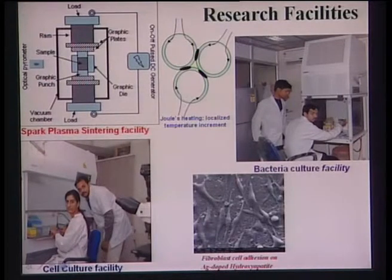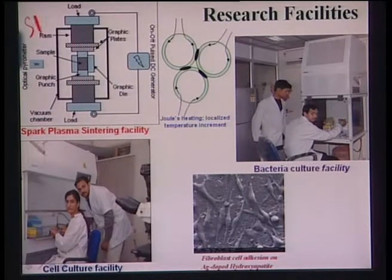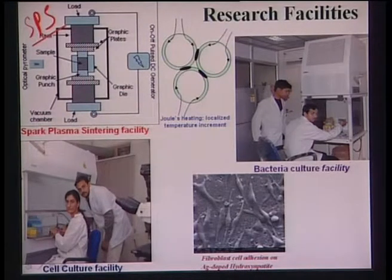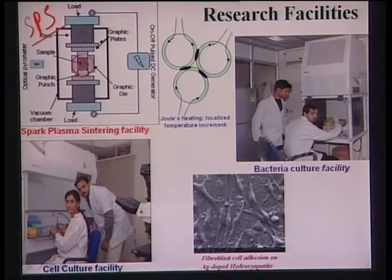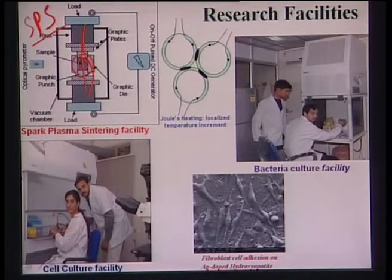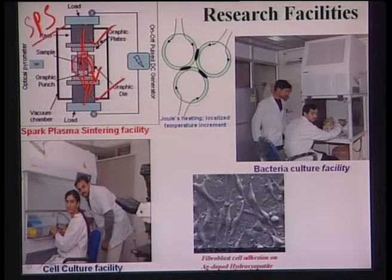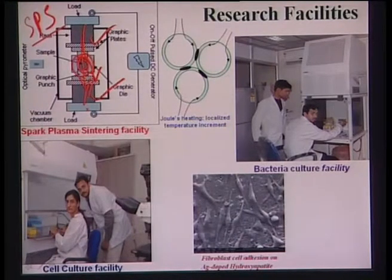These are the facilities used in this biomaterials research. This is called the SPS — spark plasma sintering machine. It involves putting a powder compact in a graphite die-punch assembly and flowing a high current both through the graphite die wall as well as through the powder compact. This is the anode, this is the cathode, and the high current passing through the powder compact helps in densification or consolidation of the material.